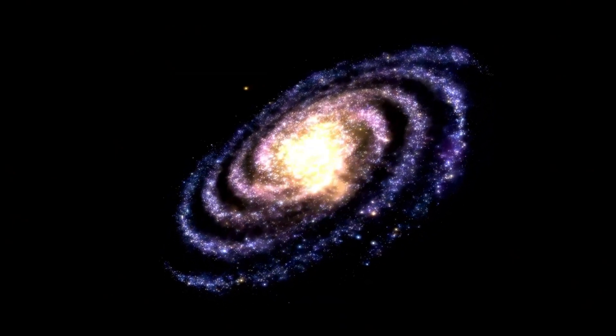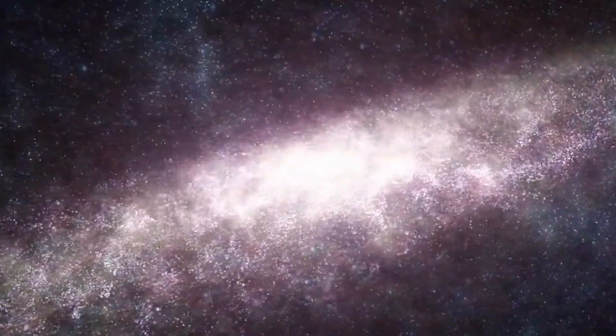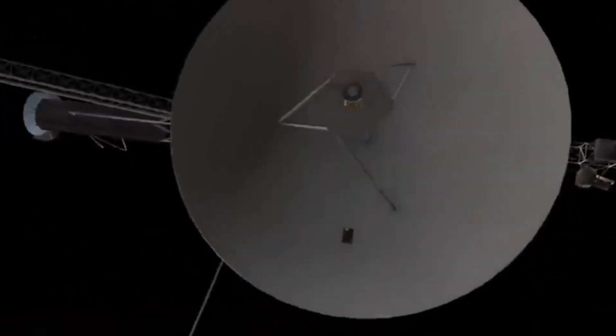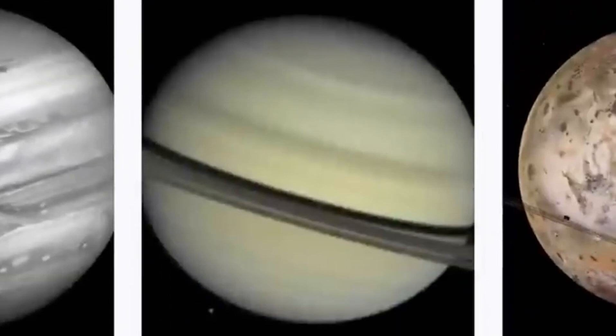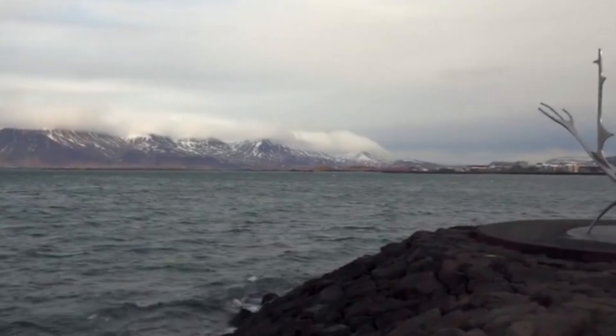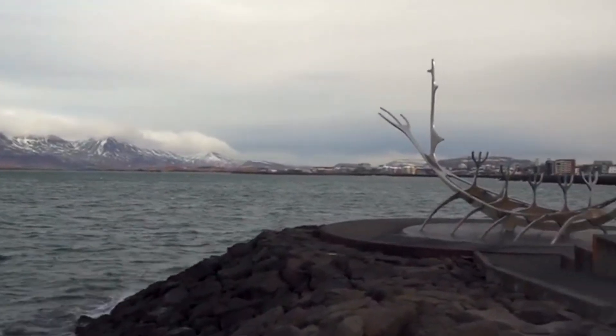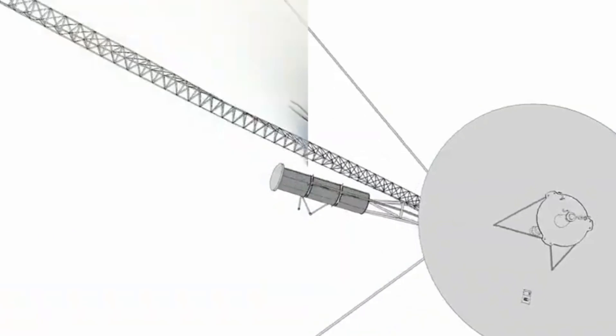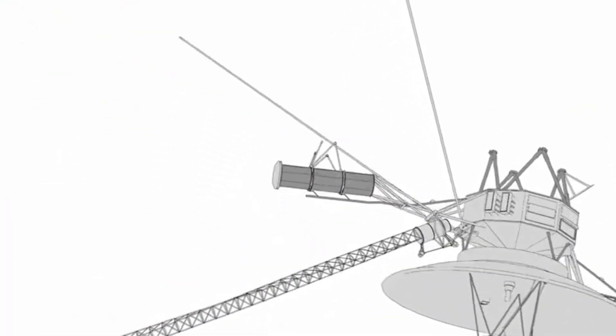Voyager 1 and Voyager 2 were not just ordinary spacecraft. They were meticulously designed to be stable platforms with a rotation rate more than 15 times slower than the hour hand of a clock. This design minimized any visual blur as the spacecraft captured images and data while hurtling through space.